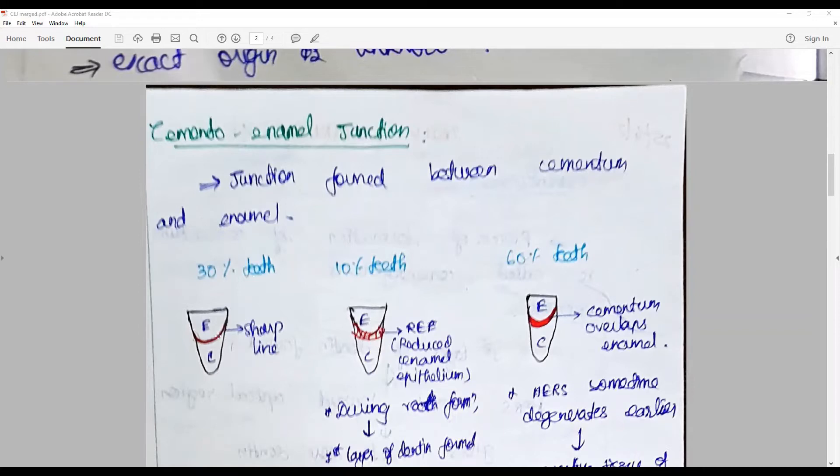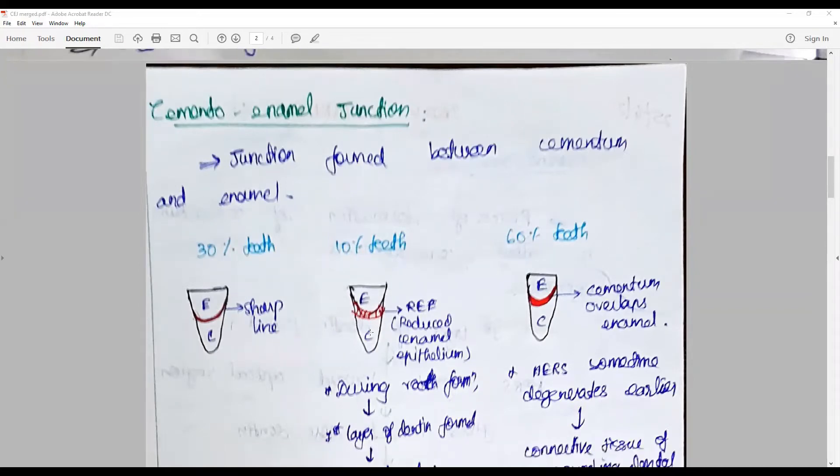In 30 percentage of the tooth it ends in a sharp line. In 10 percentage of the tooth the enamel and cementum do not meet. In 60 percentage of the tooth the cementum overlaps the enamel.